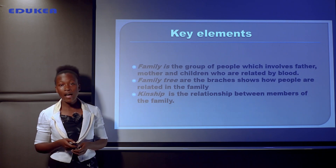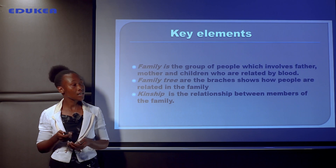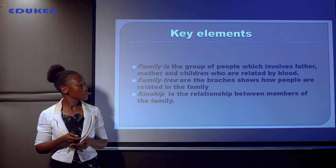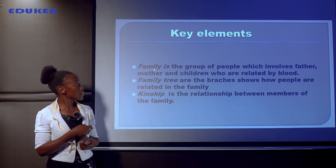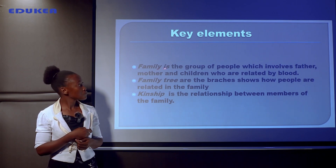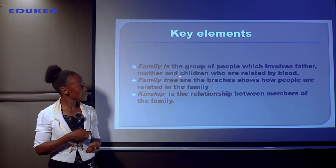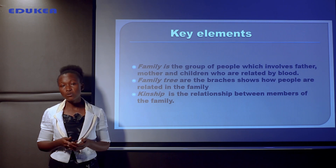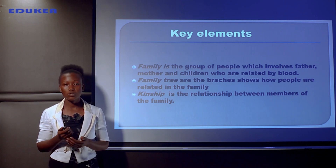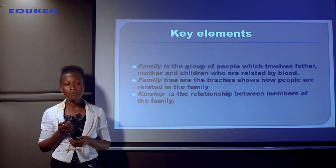There are some key elements to consider. The first one is family. Family is the group of people which involves father, mother and children who are related by blood. In order to call it a family, it should have a father, mother and a child or children who are related by blood.